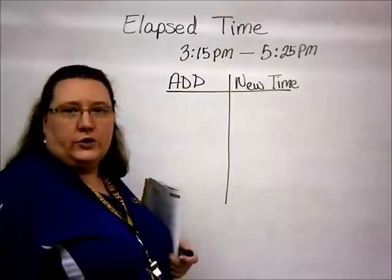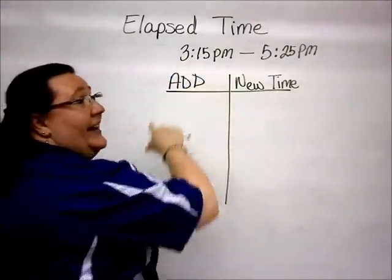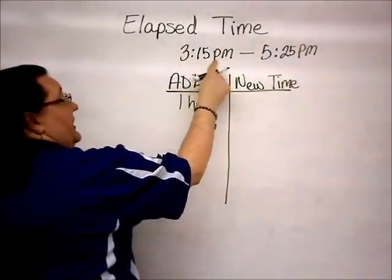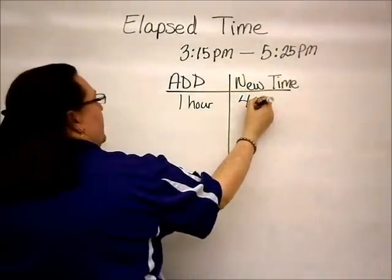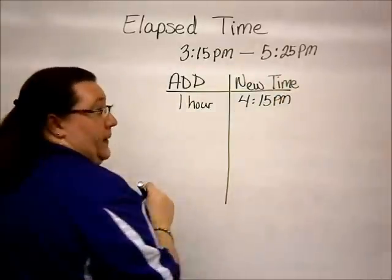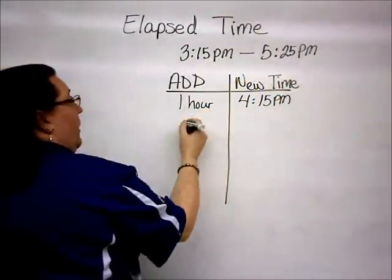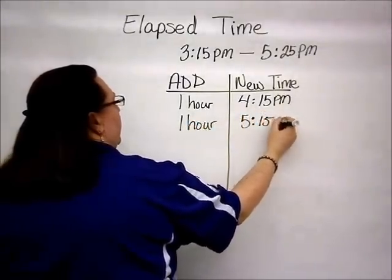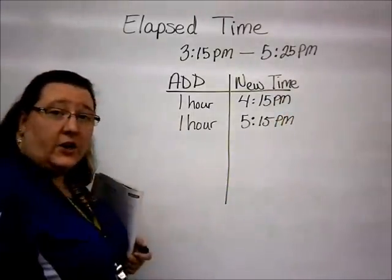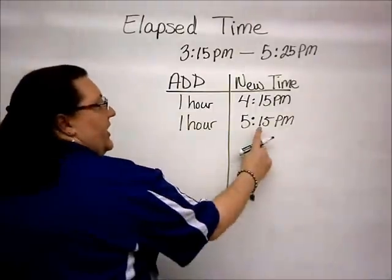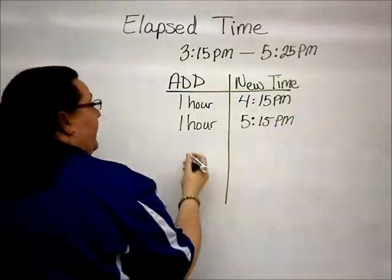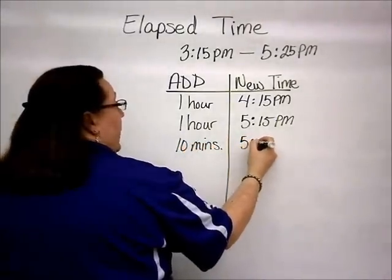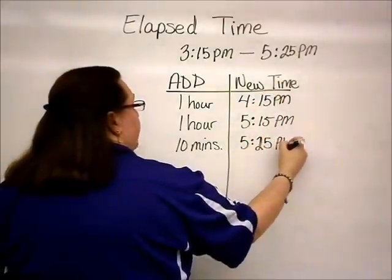It doesn't really matter where you start. We can add hours first. If we add one hour to 3:15 p.m., our new time — which we put in the second column — would be 4:15 p.m. We can add another hour, putting our new time at 5:15 p.m. From here, I can't add any more hours, but I can add minutes. To get from the 15 to the 25, I add 10 more minutes, which gives me the final time of 5:25 p.m.